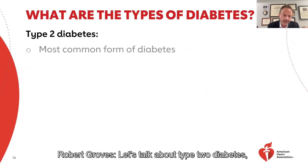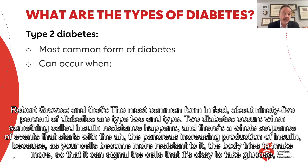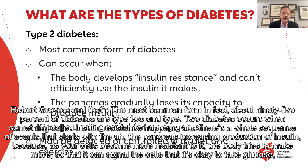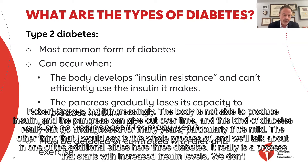Let's talk about type 2 diabetes — the most common form. About 95% of diabetics are type 2. Type 2 diabetes occurs when something called insulin resistance happens. There's a whole sequence of events that starts with the pancreas increasing production of insulin, because as your cells become more resistant to it, the body tries to make more so it can signal the cells to uptake glucose. But increasingly, the body is not able to produce insulin and the pancreas can give out over time.